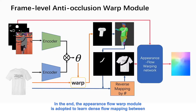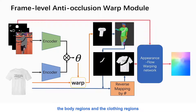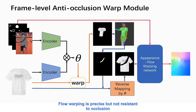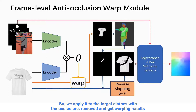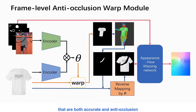In the end, the appearance flow-warp module is adopted to learn dense flow mapping between the body regions and the clothing regions. Flow-warping is precise but not resistant to occlusion. So we apply it to the target clothes with occlusions removed, and get warping results that are both accurate and anti-occlusion.